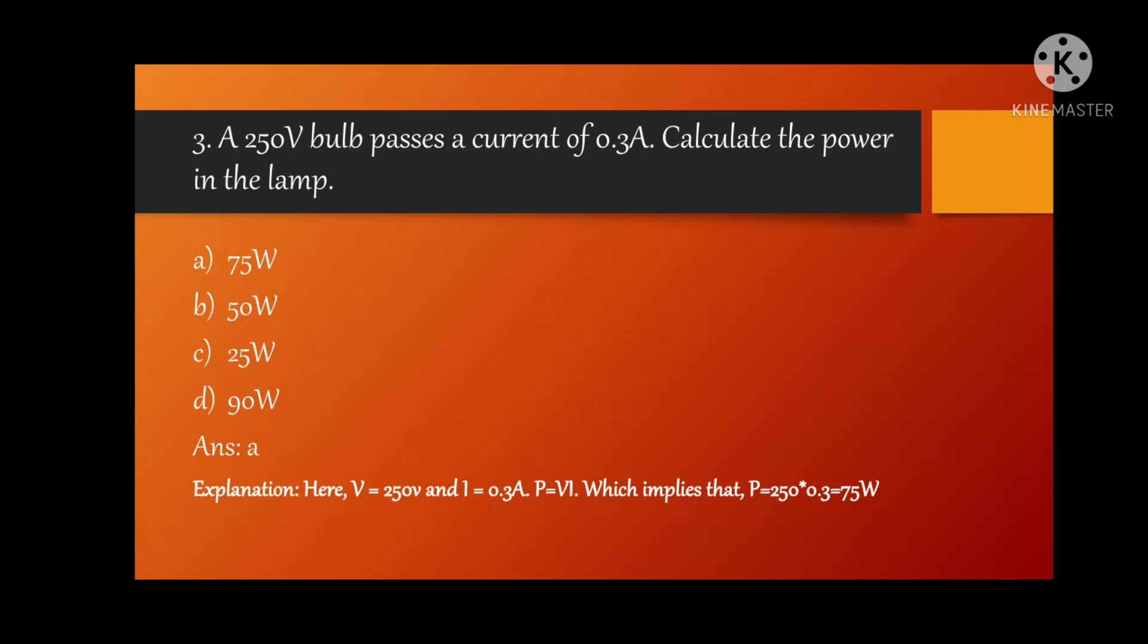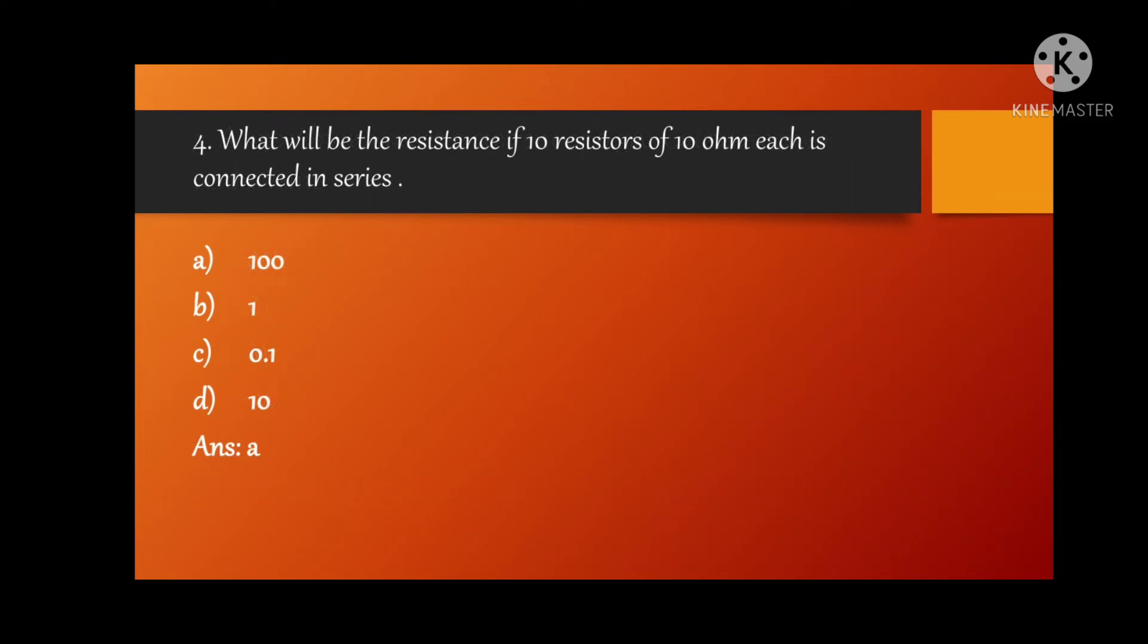Third MCQ: a 250 volt bulb passes a current of 0.3 ampere, calculate the power in the lamp. Correct option is A, 75 watt. Explanation is given below, you can see it.